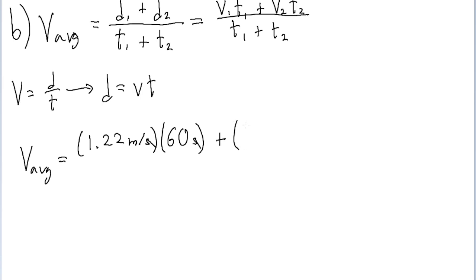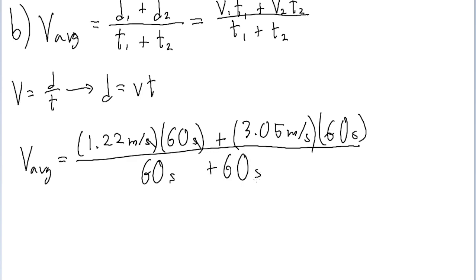Then plus v sub 2, which is 3.05 meters per second, and multiply by t sub 2, which is, again, 60 seconds. Then we divide all of this by t sub 1 plus t sub 2, which is just 1 minute plus 1 minute, or 60 seconds plus 60 seconds, or just 120 seconds. And if you put that into a calculator, then we find an average velocity of about 2.14 meters per second. And that's our answer for part B.